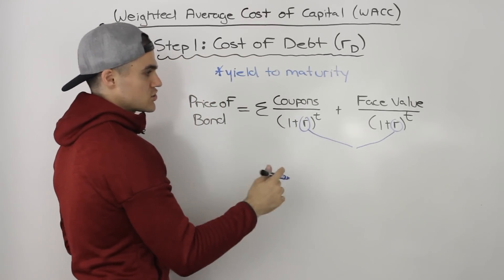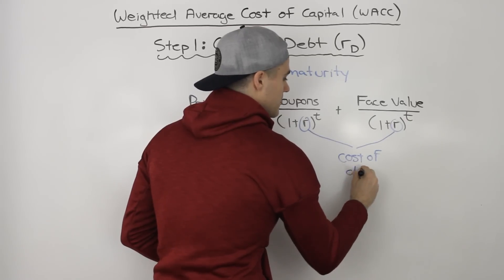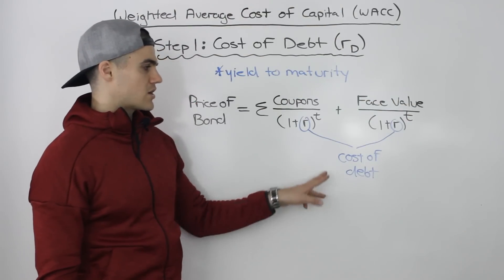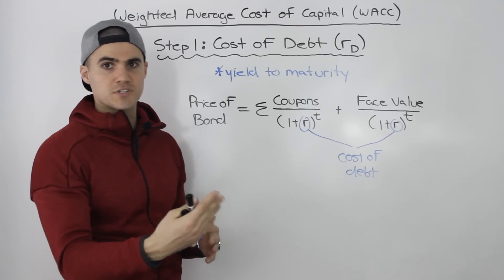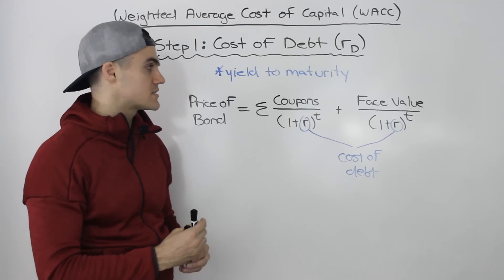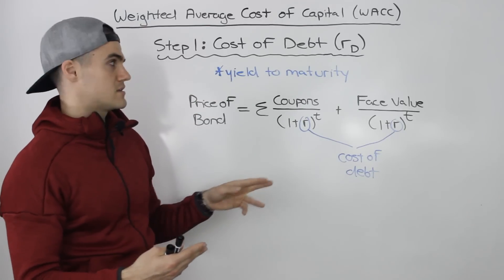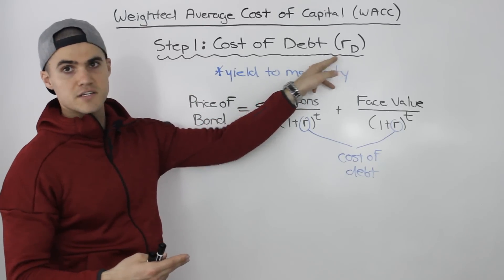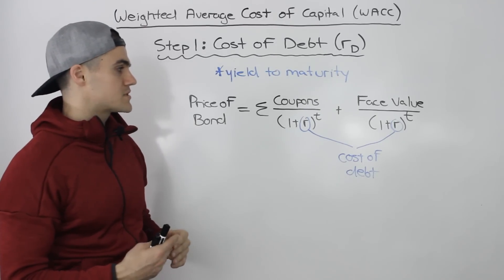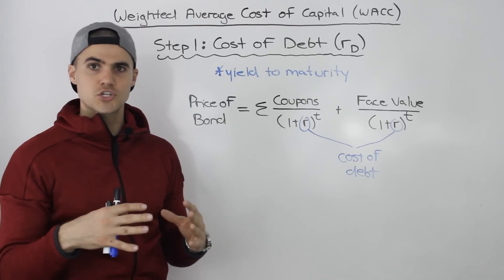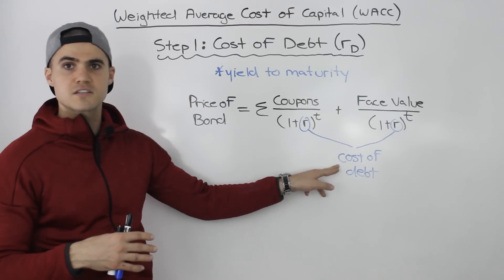In this chapter, that's basically your cost of debt. Now a lot of times the cost of debt in certain questions will be given straight away — the question will tell you what the yield to maturity on the bonds is. There's not going to be a lot of work for step one then, because that R_D figure — that cost of debt figure — is already given to you. However, many times they're not going to give it to you; they're going to give you a bunch of information about the bonds and you're going to have to figure out that yield to maturity, or cost of debt, yourself.